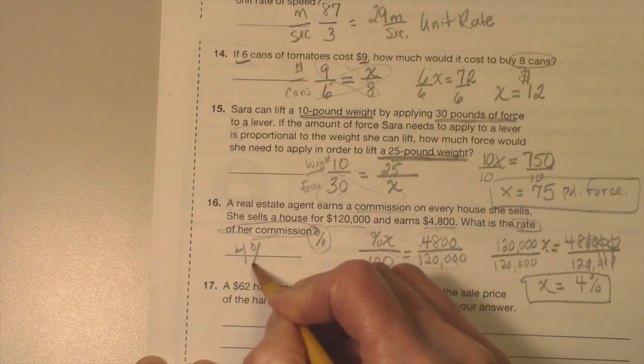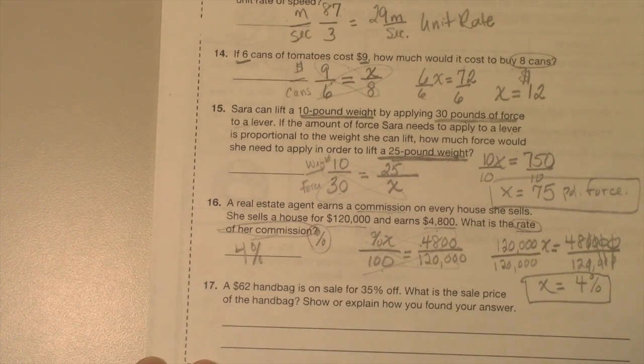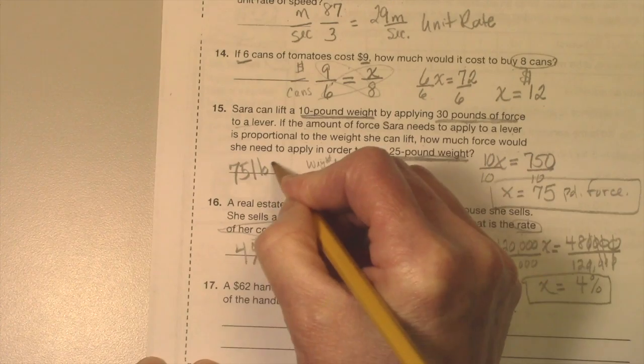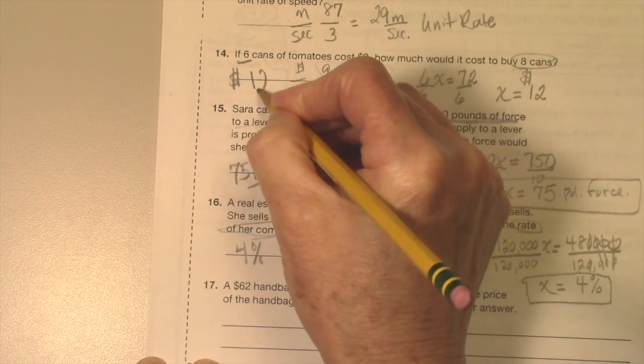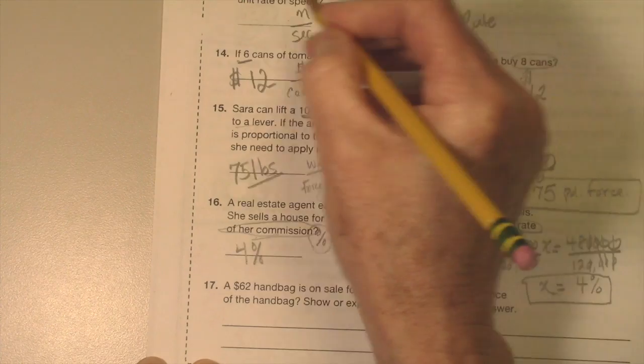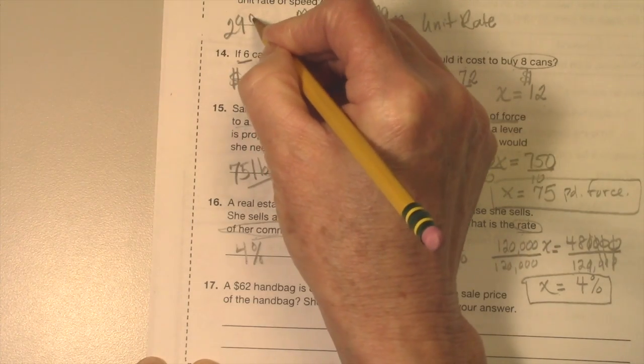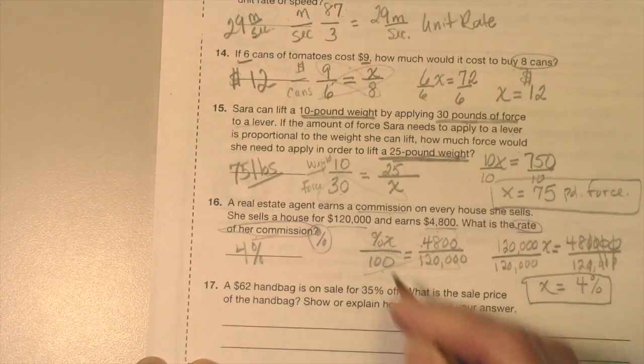So she earns a 4% commission. This was 75 pounds for that one, and this was $12. And this is the unit rate, 29 meters per second.